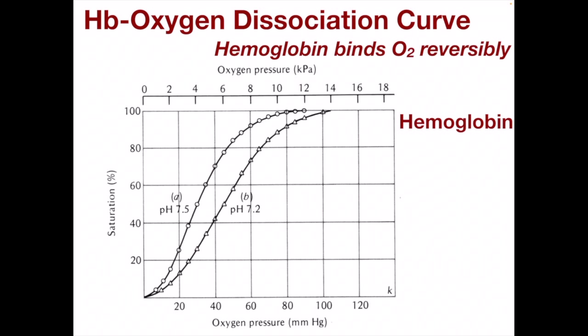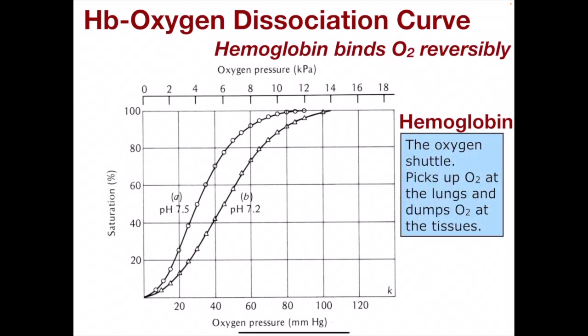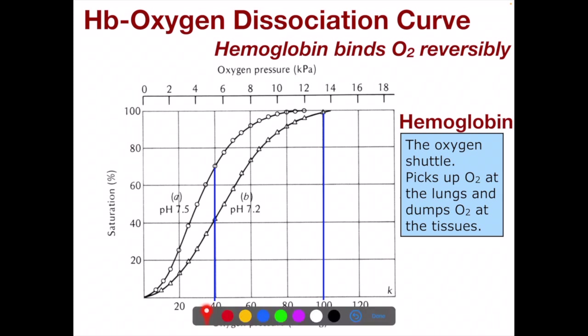One thing that will really help you understand what's going on is the hemoglobin oxygen dissociation curve. It describes how hemoglobin binds oxygen reversibly. Hemoglobin is the oxygen shuttle — it picks up oxygen at the lungs and dumps O2 at the tissues. If we take a look at this curve, notice that the y-axis describes oxygen saturation — the percent saturation, or what percent of the hemoglobins have oxygen bound to them.